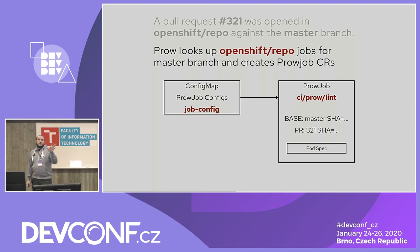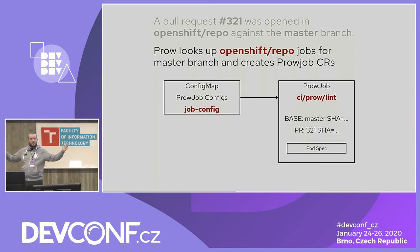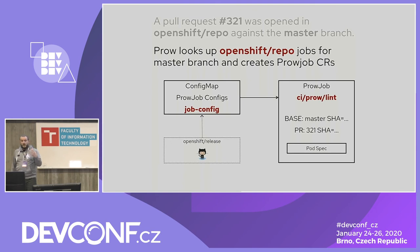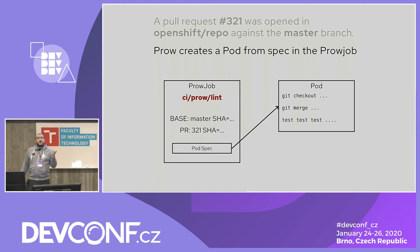Prow then looks up the jobs configured for that repo and branch and creates Prow job custom resources — standard Kubernetes custom resources. Prow looks for these definitions in a config map where it stores all the definitions for all the jobs across all those 200-plus repos. These job definitions are actually tracked in the OpenShift release repository and are synced through the config map asynchronously in a GitOps way. This will be important for the rehearsal later.